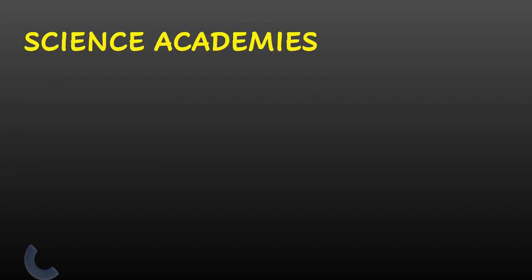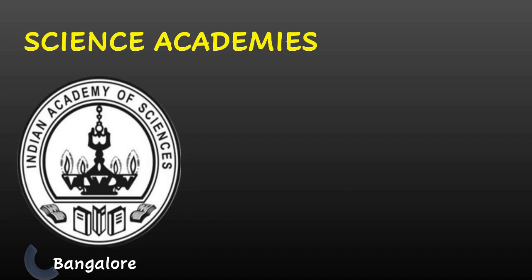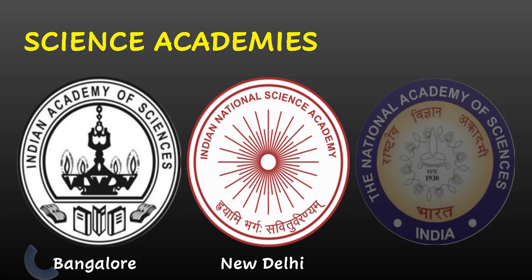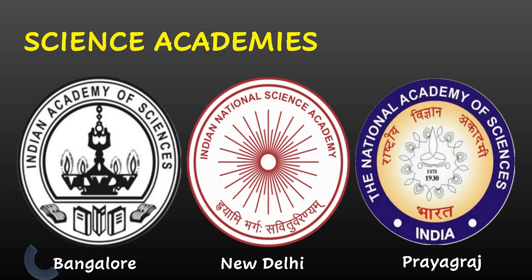Let me now tell you a few words about the three Academies, Science Academies in India. The first one is located in Bangalore. Second one is Indian National Science Academy, INSA, that is located in New Delhi. And the third one is the National Academy of Science.